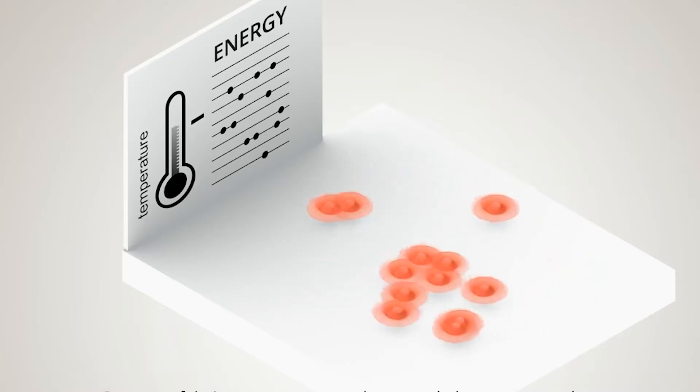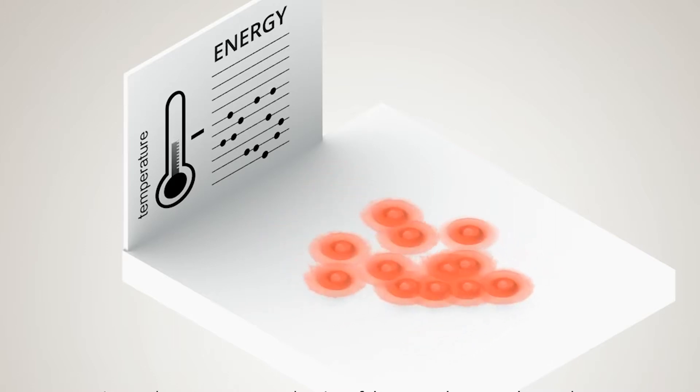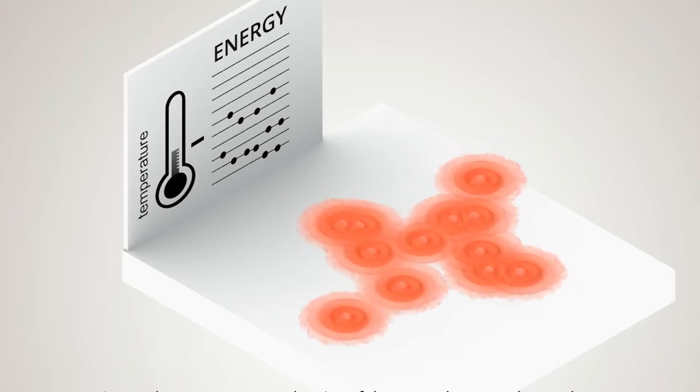At a certain point, the atoms have so little energy that they all gather together and form a sort of blob in the lowest energy state. When this happens, the atoms are close enough together that their wave functions overlap and they form a single coherent wave.